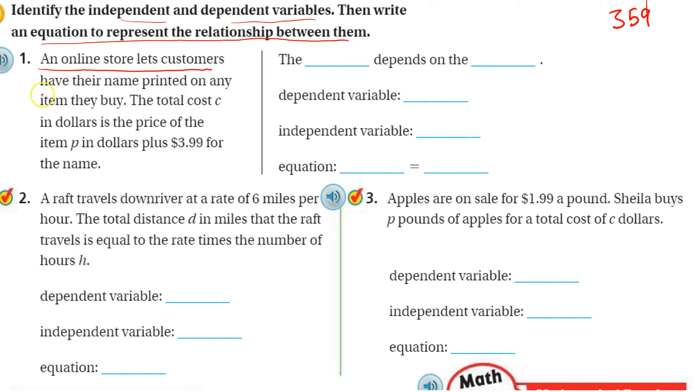So an online store lets customers have their name printed on any item they buy. The total cost, C, in dollars, is the price of the item, P in dollars, plus $3.99 for the name. Now, they say identify the independent and dependent variables.